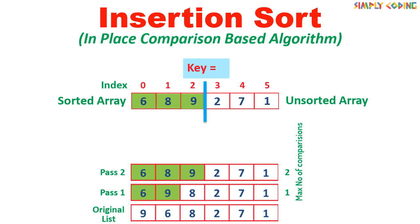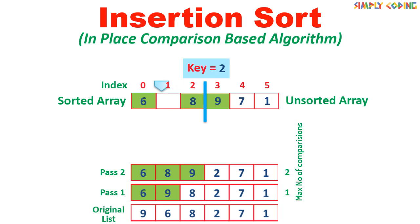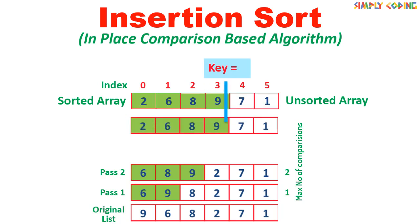Now it will go through the next pass. Here 3 elements are in sorted and 3 are in unsorted array. It starts by taking the first element of unsorted array and copying it in the key. It then starts comparing backwards with sorted array till it finds a value lesser than it or till the end of sorted array is reached. Here first 9 is compared with 2. It is higher, so it is moved right. Next 8 is also higher, so it is shifted. Then 6 is also higher, so it is also shifted right. Since we have reached the end of sorted array, key is copied in the first position. This completes this pass.